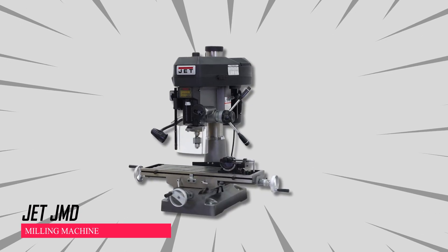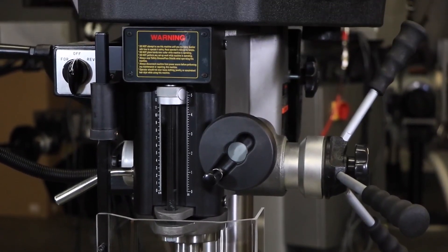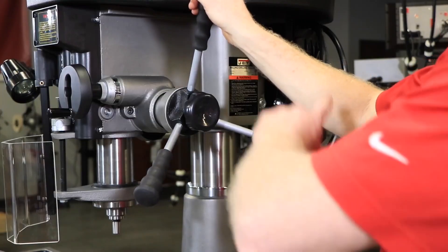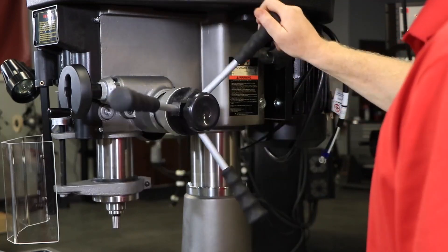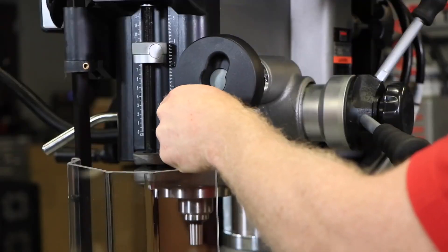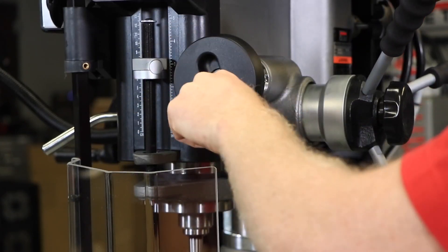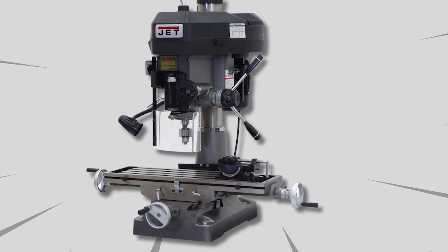Jet JMD Milling Machine. This machine boasts a one-piece cast iron column that provides robust support and stability during operation. Its head swivels a full 360 degrees, offering versatility for various drilling angles. Equipped with a positive quick stop knob and a clear internal depth gauge, it ensures precise drilling depths with ease. The forward and reverse switch enhances convenience while operating the machine.